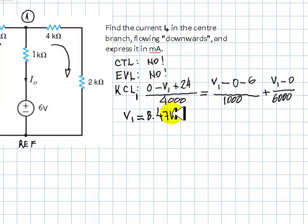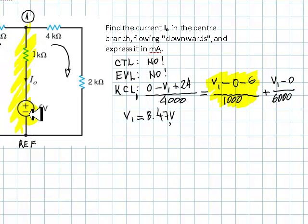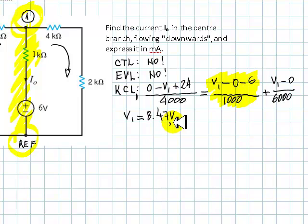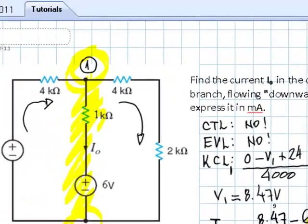The exercise asked us to determine I0, the current in the center branch. I0 corresponds to this term in our equation: V1 minus 0, minus 6, divided by 1,000. Substituting V1 = 8.47 volts: 8.47 minus 6, divided by 1,000 ohms. That gives us the current I0.